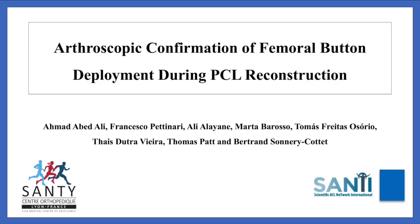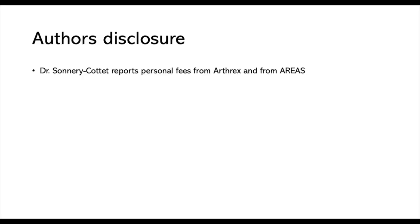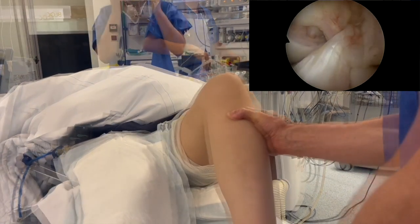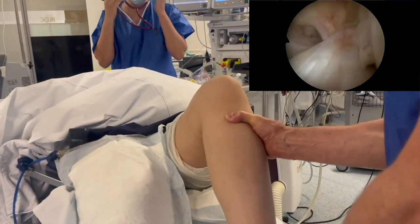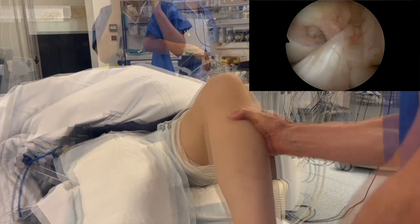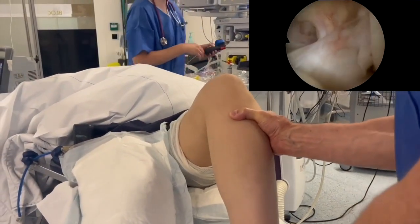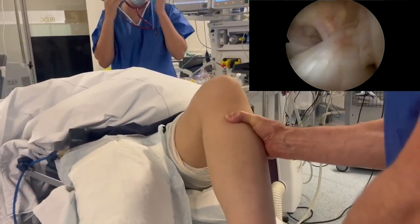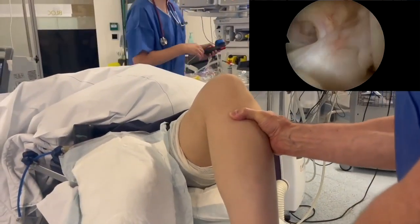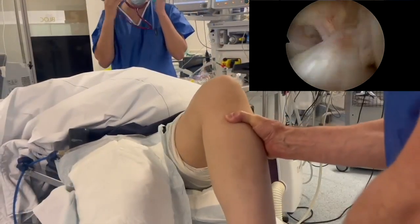This video presents a new arthroscopic technique to directly visualize the safe deployment and sitting of the tightrope button on the medial cortex of the femur during PCL reconstruction. During examination under general anesthesia, instability of the knee can be identified with the posterior drawer test, which is endorsed with the detection of a slack ACL during arthroscopy.